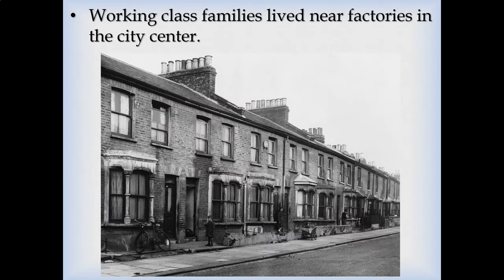The working class families, however, tended to live near urban centers and also near factories, which often were in the city center. These people lived in smaller homes — often not a home at all, but an apartment. Having an individual house would have been very rare for working class. These people tended to cluster around the factory because many of them were walking to work every day and wanted to live close to their source of employment.